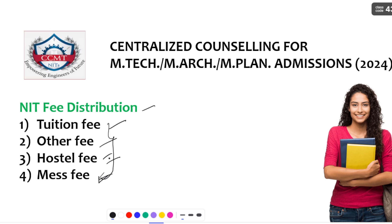If you are a day scholar, you are exempted from the hostel fee and mess fee — the remaining fee you have to pay anyway. When you are getting admitted into the college, the semester one fee includes all these things — the complete fee you have to pay in semester one. It includes convocation fee and all other fees, and semester one fee is very high compared to remaining semesters because you also have to pay the caution fee.